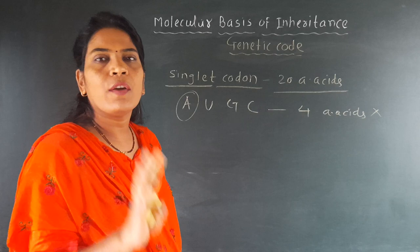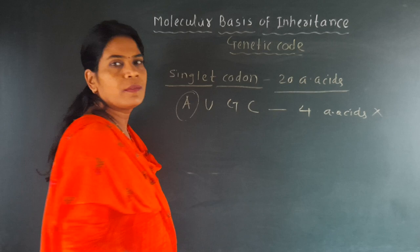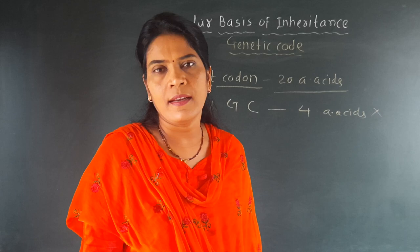Because there are only 4 bases, if one base is considered as one codon, then 4 codons will form only 4 amino acids, not 20. The second hypothesis is the combination of two codons — what we call a doublet codon.